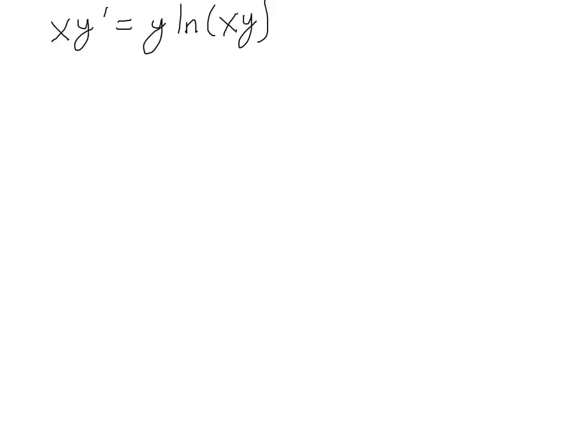Let's solve the ODE x times y prime equals y times the natural log of x times y. This is going to use substitution, but before we use substitution we have to write it in a way that makes sense. So I'm going to divide everything through by y and get y prime over y is equal to the natural log of x plus the natural log of y.